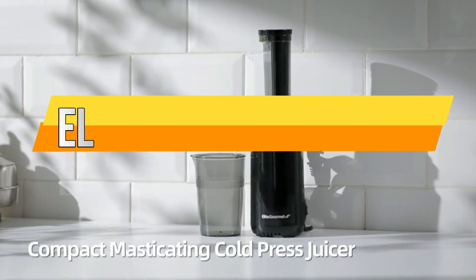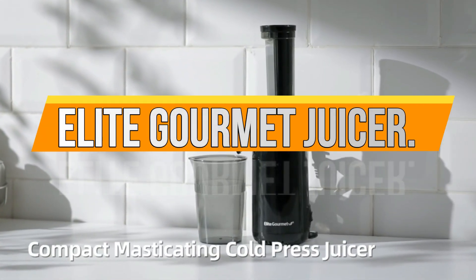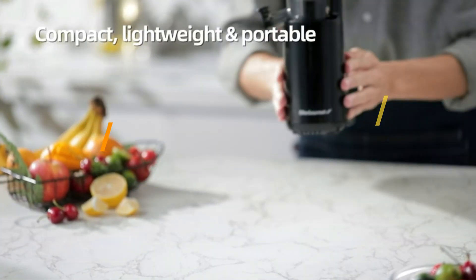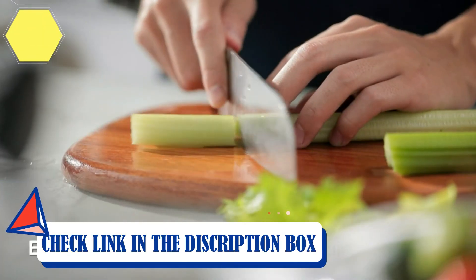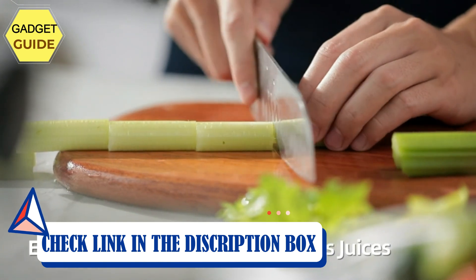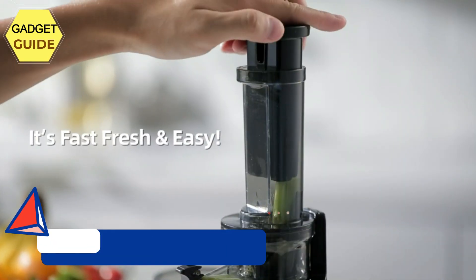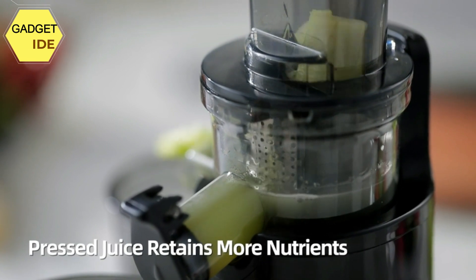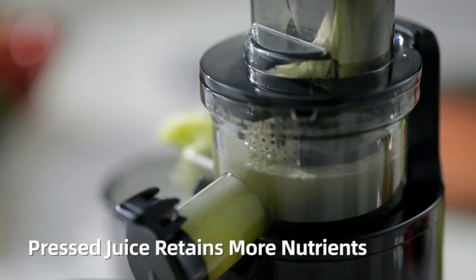Number 5: Elite Gourmet Juicer. Make delicious cold-pressed juice with Elite Gourmet EJX 600 Compact Masticating Slow Juicer. Just add fresh fruit or vegetables and the juicer will do all the magic, fully separating pulp from juice and ensuring you get the most health benefits in your drinks.